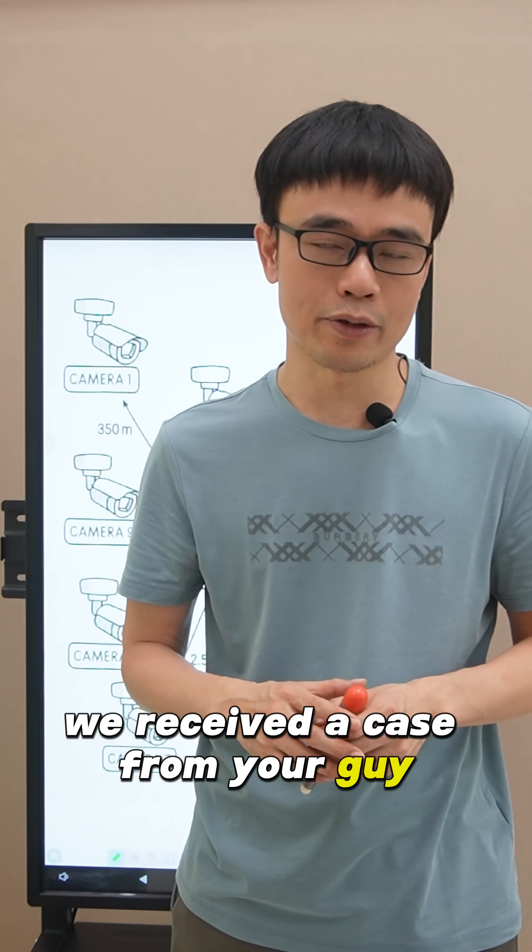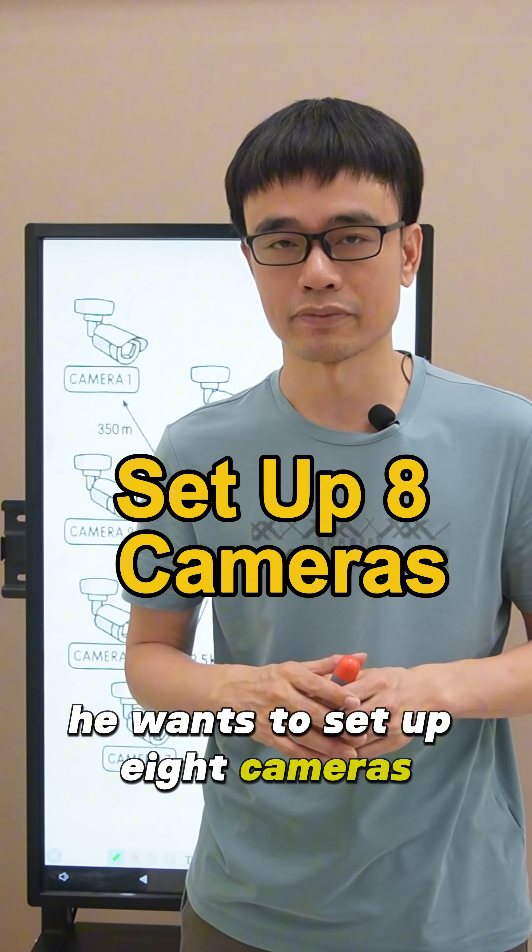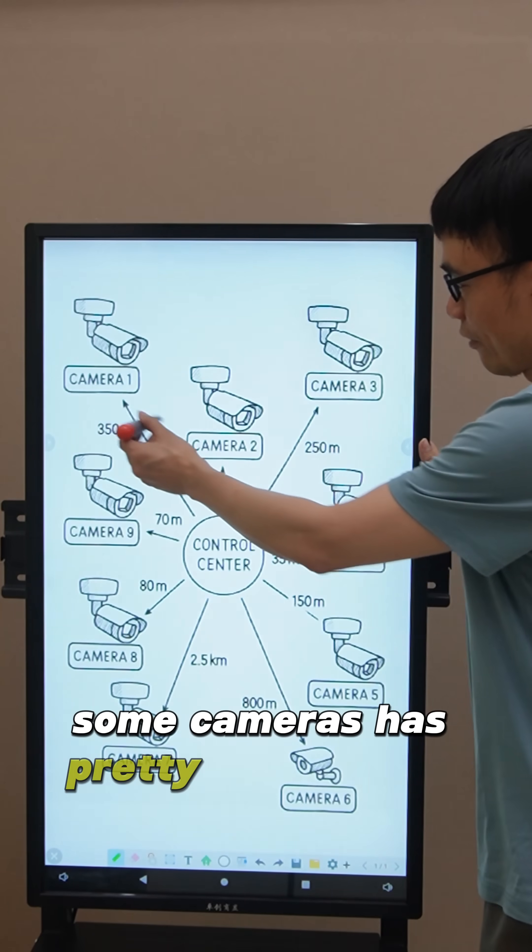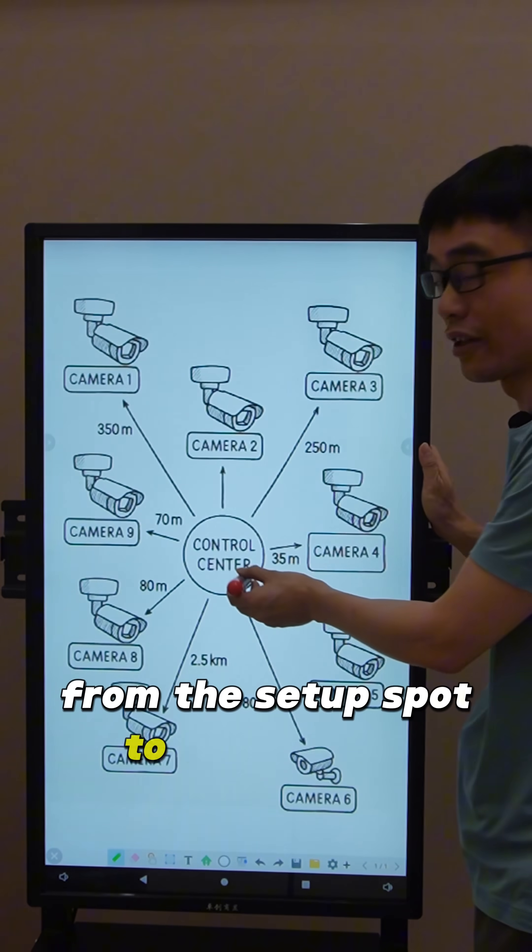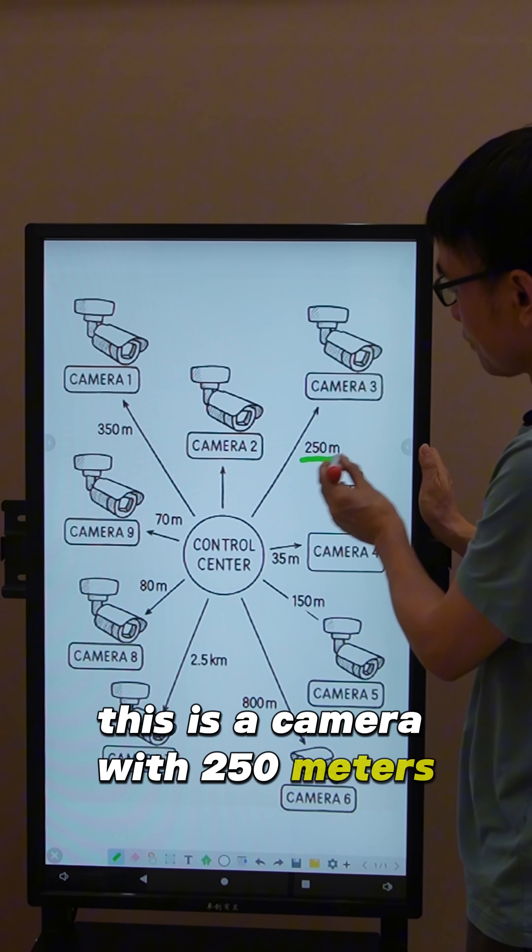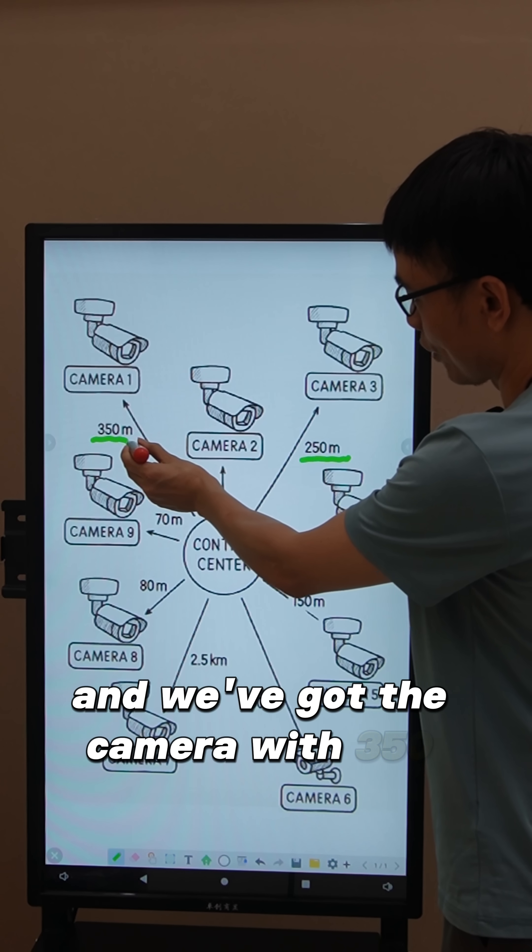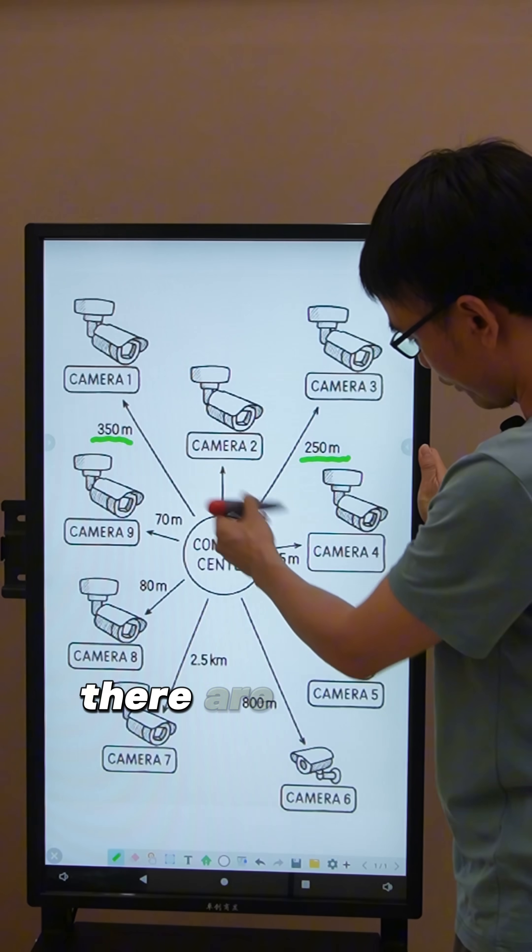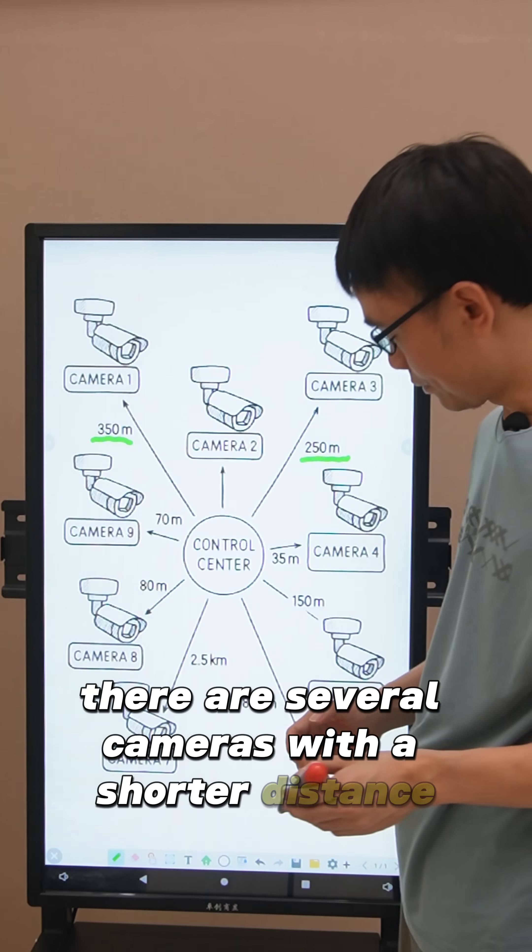We received a case from a guy who wants to set up 8 cameras. Some cameras have pretty far distances from the setup spot to the control center. There's a camera at 250 meters, and we've got a camera at 350 meters. There are several cameras with shorter distances.